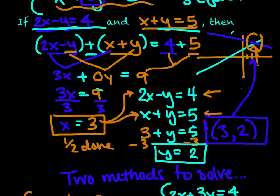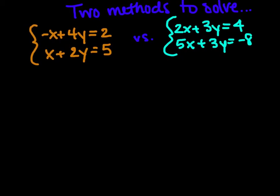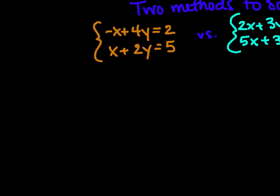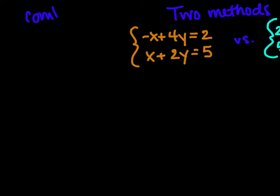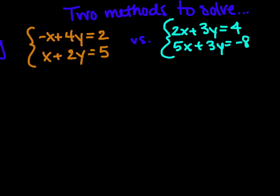This coordinate pair (3, 2), if put into either of these two equations, will be a true statement — it works in both of them. There are two methods to our process. We can call this combining or elimination. Combining means putting the two equations together — the x and y terms and their solutions. We're also eliminating because we're trying to get rid of one of our variables. In order to do that, we may need to add or subtract when combining.